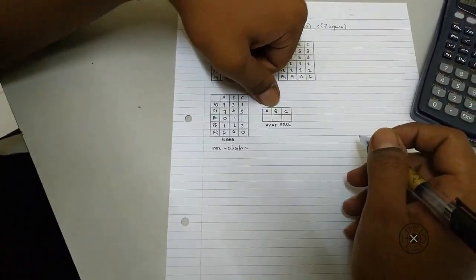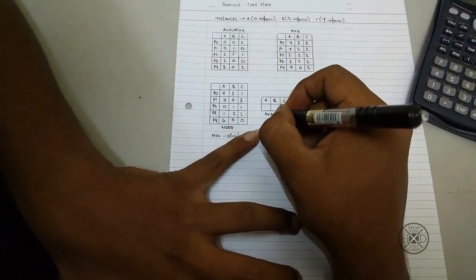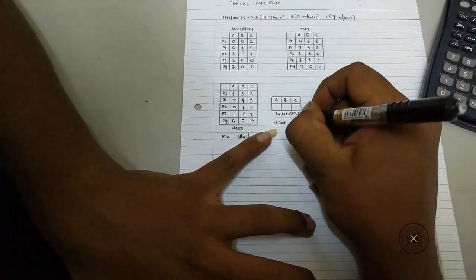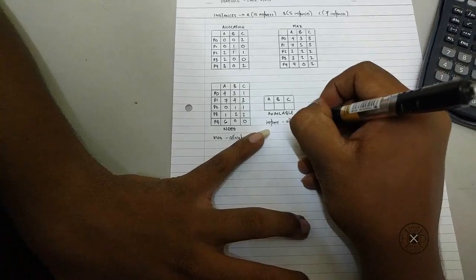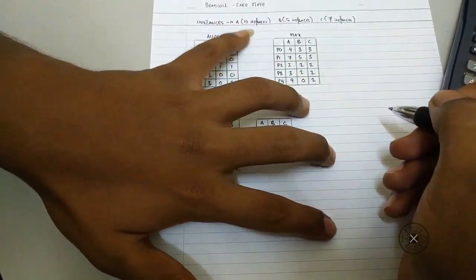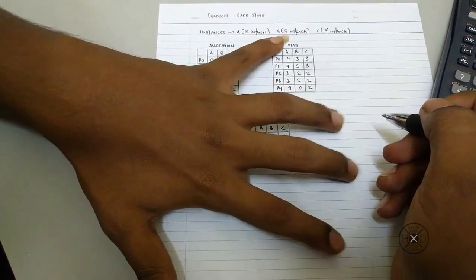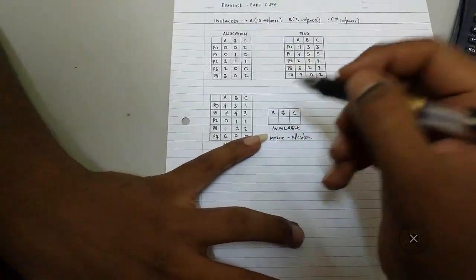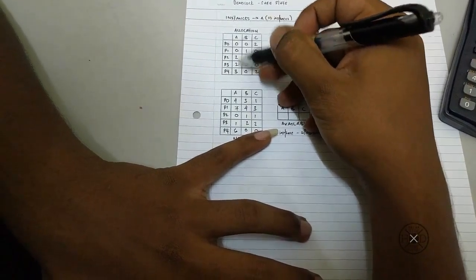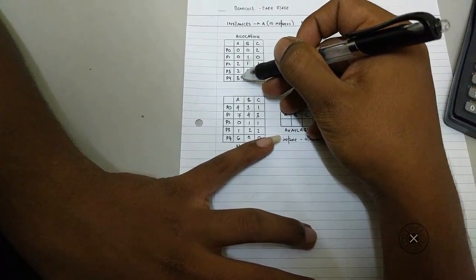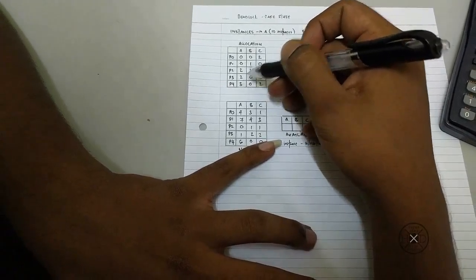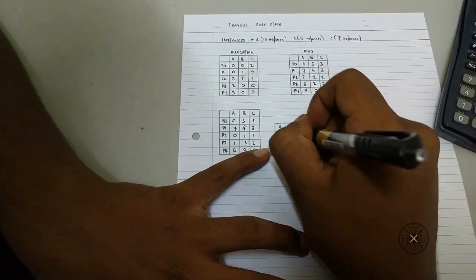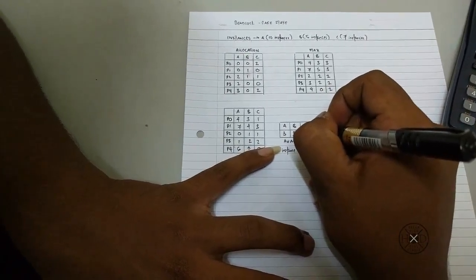Now we need to create an available table. The formula is instance minus allocation. So I have stated the instance for A is 10 instances, for B is 5 instances, for C is 7 instances. Now we will have to add up in A. So 2 plus 2 is 4, 4 plus 3 is 7. So 10 minus 7 is 3. So the available table will be 3, 3, 2.